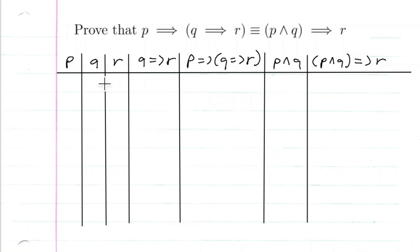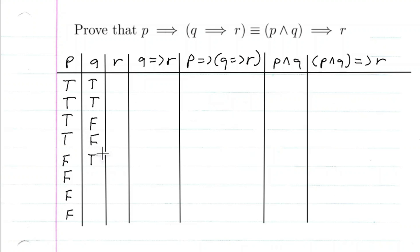We find all the possible combinations of true and false between the three propositions. So: true, true, true, true, false, false, false, false for P; true, true, false, false, true, true, false, false for Q; and true, false, true, false, true, false, true, false for R. We do that in that way so we can get all those combinations.